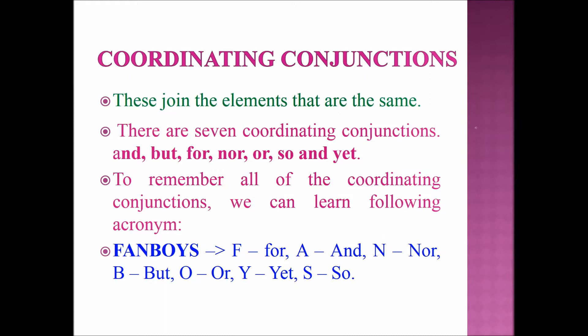There are seven coordinating conjunctions: and, but, for, nor, or, so, and yet. To remember all of them, we use the acronym FANBOYS. F refers to 'for', A denotes 'and', N refers to 'nor', B denotes 'but', O refers to 'or', Y refers to 'yet', and S denotes 'so'.